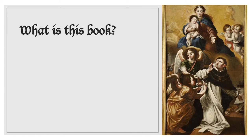What is De Ente et Essentia? That is, St. Thomas' book, which we translate in English as On Being and Essence. This book was written early on in St. Thomas' career, sometime between 1252 and 1256 AD.